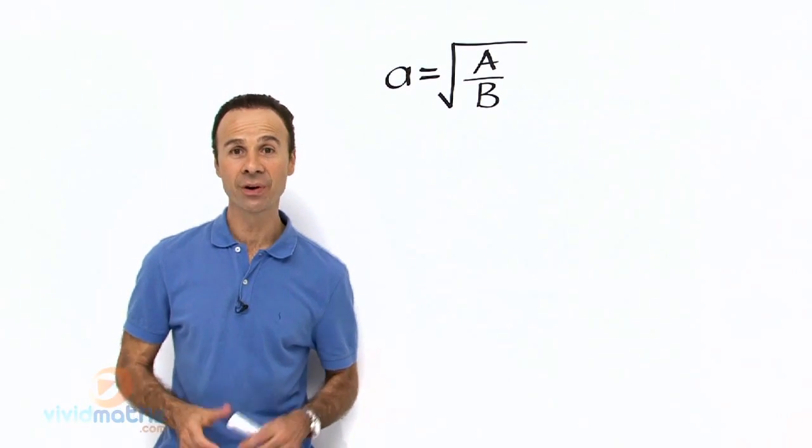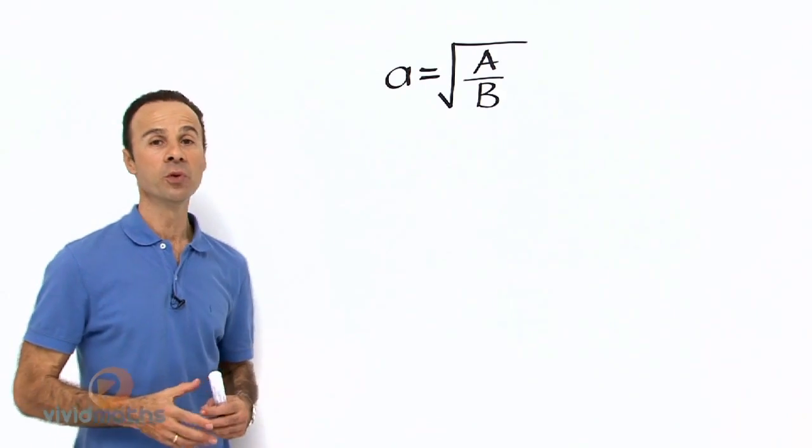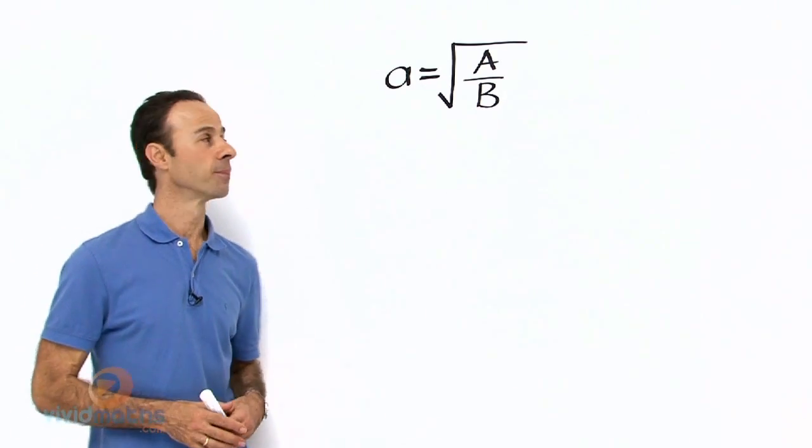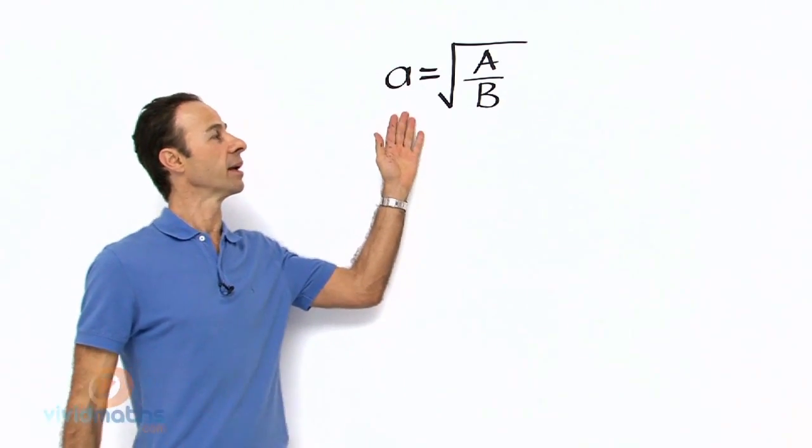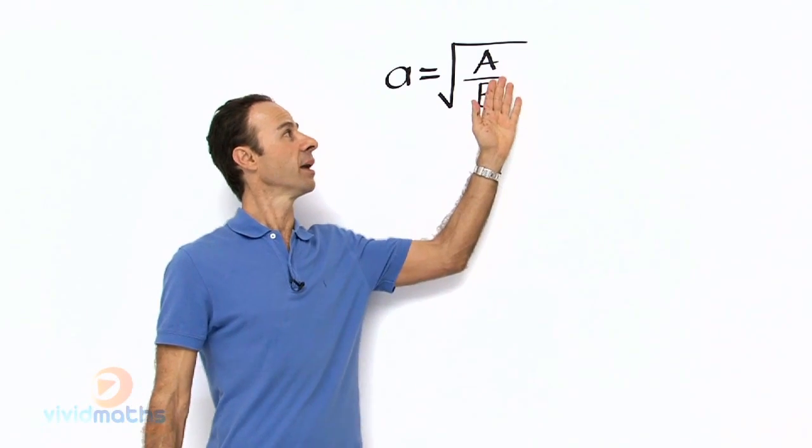Ok, this is a most empowering example for moving around and getting the new subject. At the moment we have little a equals the big square root of A over B.